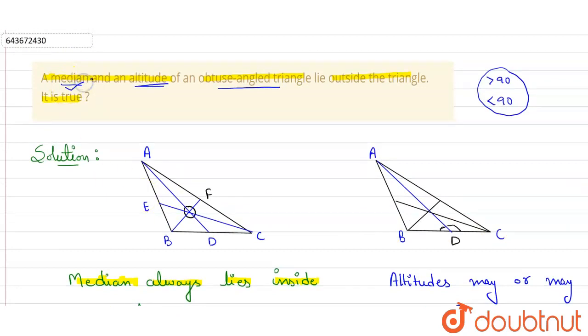So here, yes, median will lie inside the triangle, but altitude will not lie inside the triangle. Here triangle is obtuse angle triangle. So this statement is not true. It is false. Thank you.